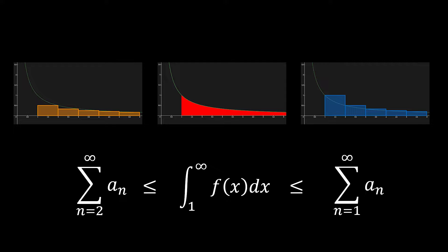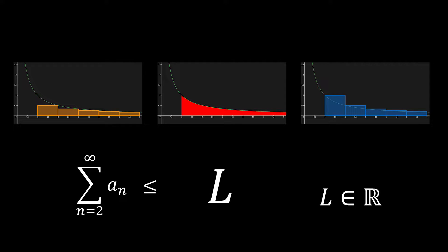Now let's make one assumption. If the infinite integral in the middle converges to some real value, let's call it L, what would happen to the left infinite series? The infinite series on the left cannot exceed a value of L. Therefore, if the infinite integral converges to a certain value L, the left infinite series must also converge.